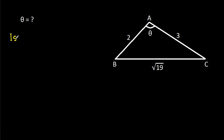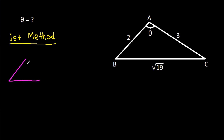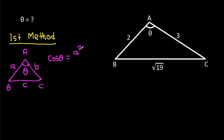So the first method: in any triangle ABC, if AB is A, AC is B, BC is C, and this angle is theta, then cos theta equals A squared plus B squared minus C squared over 2 times A times B.